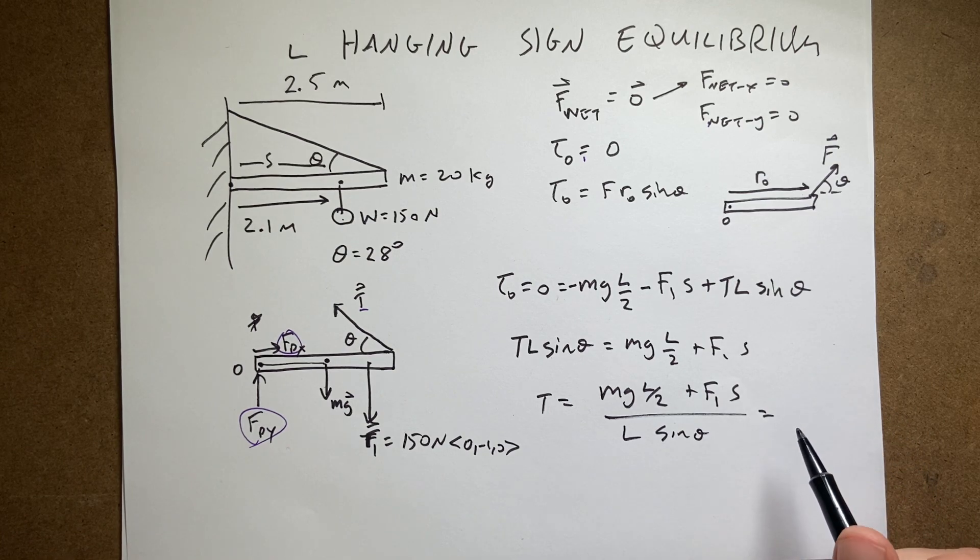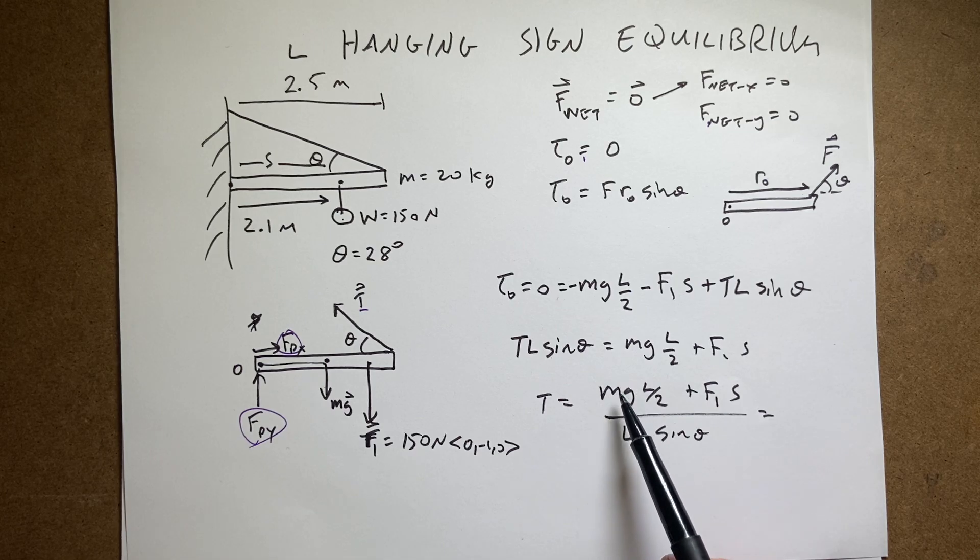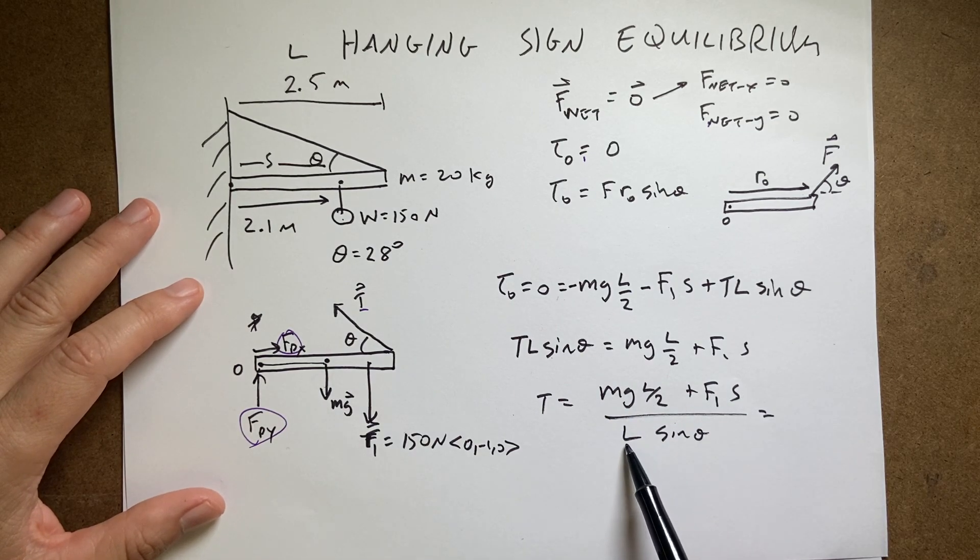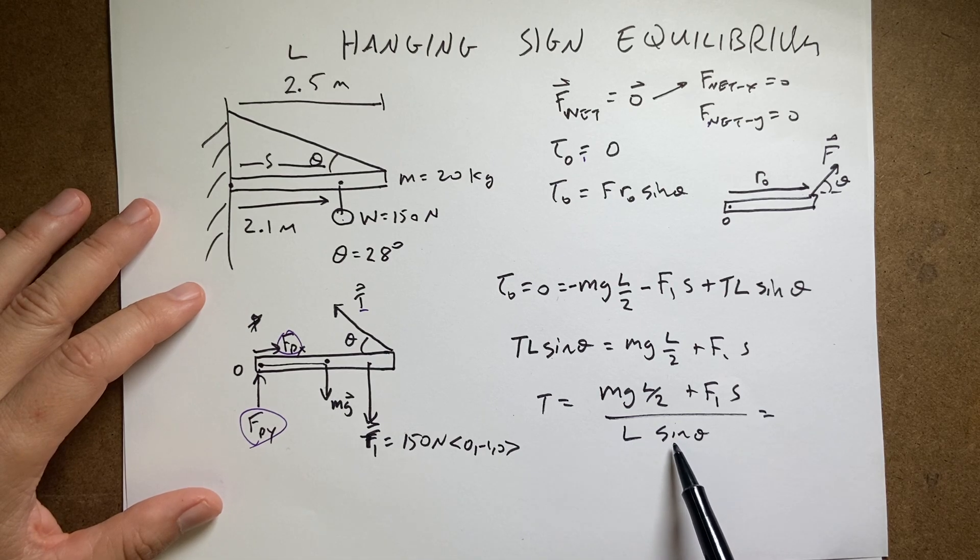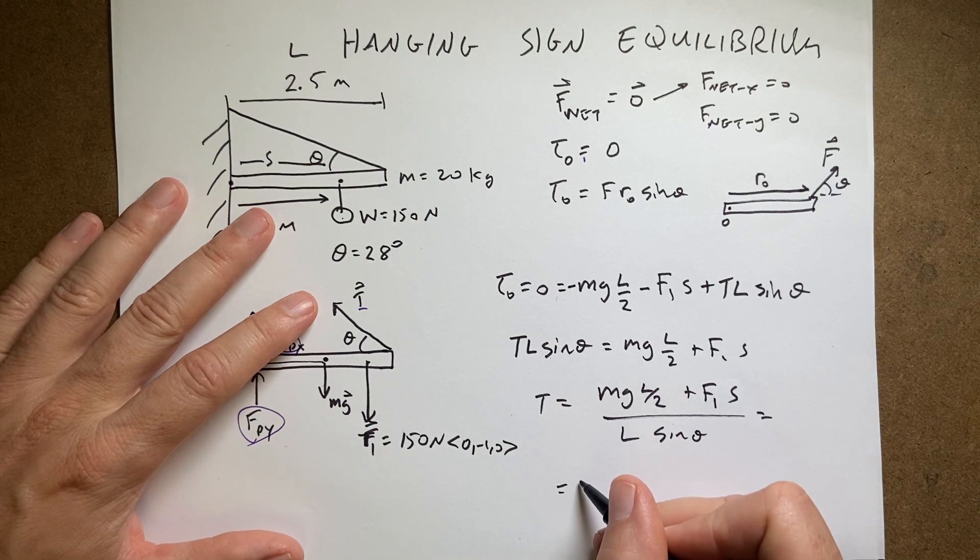Okay. Now actually let's just really quick check. I want this to have units of newtons. So this is newtons times meters is newton meter. This is also newton meter, but on the bottom, I'm dividing by meters times nothing. So I do get units of newtons. So that's cool. So let's put in my values.